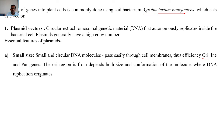The PAR gene is also a feature of plasmids. The origin of replication depends on both the size and conformation of the molecule — this is where DNA replication originates. The ORI region ensures the plasmid can replicate inside the host cell. This small size and origin of replication region allow autonomous replication.